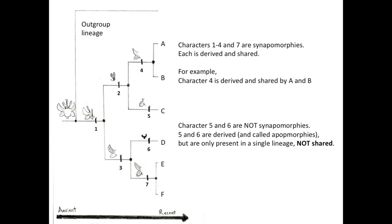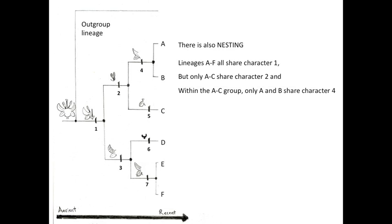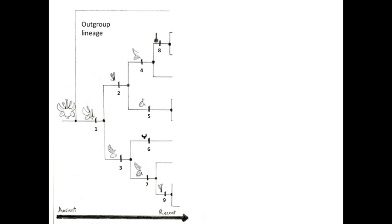Further splitting of populations now results in six lineages. Characters 1 through 4 and 7 are synapomorphies — each is derived and shared. For example, character 4 is derived and shared by lineages A and B. Characters 5 and 6 are not synapomorphies; they are derived but not shared. They are called apomorphies. Note that there is nesting of synapomorphies: lineages A through F all share character 1, but only lineages A through C share character 2, and within the AC group, only A and B share character 4. So the nesting shows the branch order — the nodes, the common ancestors.